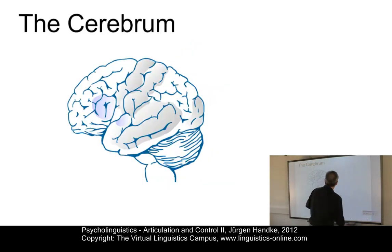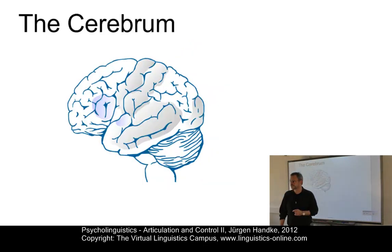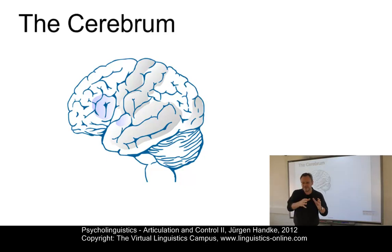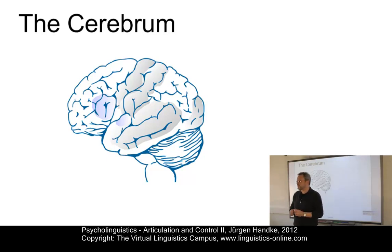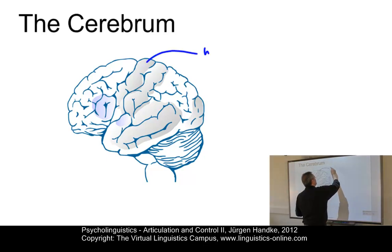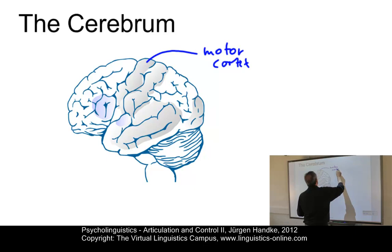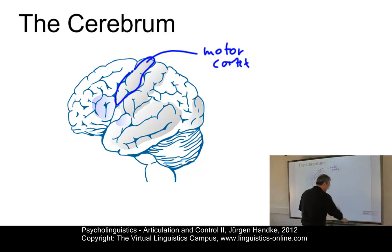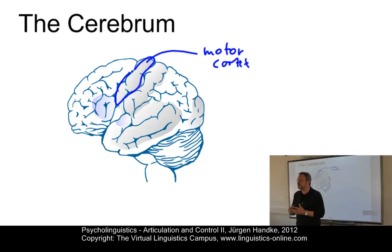Let us look at the cerebrum in more detail. The cerebrum can be subdivided into its outer surface, the so-called cortex, which is divided into a left and into a right hemisphere, and various subcortical elements. The motor cortex is the first area we're looking at — this area here — the motor cortex. This part is primarily responsible for the control of movement over the whole body.